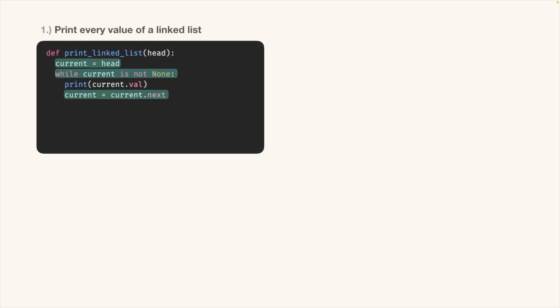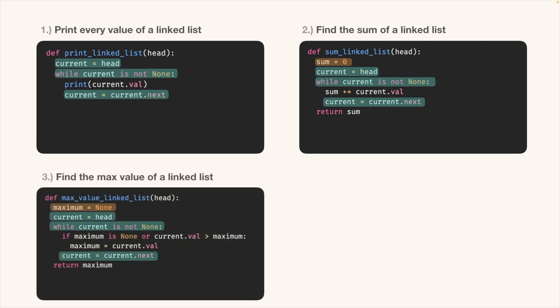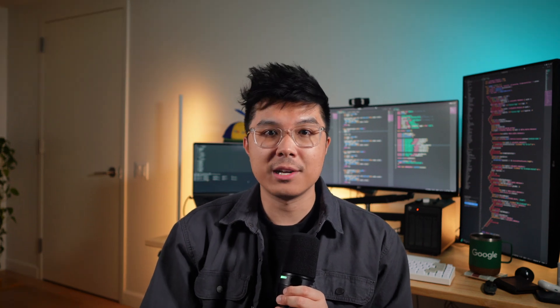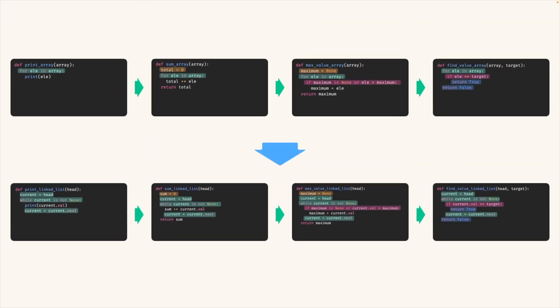Solution one: just iterate through the linked list. Solution two: iterate through the list again, but maintain an outer variable to accumulate the sum. Solution three: iterate again and maintain an outer variable, but use an if statement. Solution four: iterate with an if statement again, but be careful of the two different return values. All four problems require the core pattern of iterating through a linked list. The sequence starts easy and gets a little more complex with each problem. You won't find a progression like this on LeetCode — not on the Blind 75, the LeetCode 150, or the whatever 100.